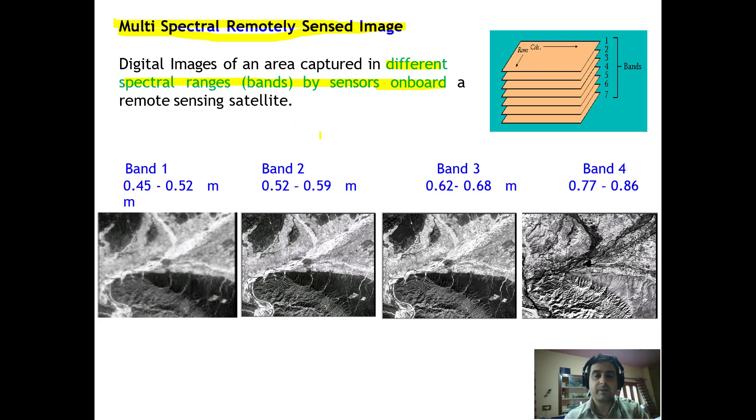Sensors which are placed on the satellite have different detectors for detecting images in different spectral ranges, which gives rise to different bands of images. This is band 1, band 2, band 3, and band 4.